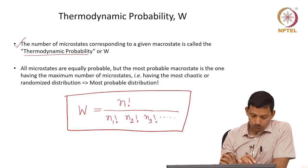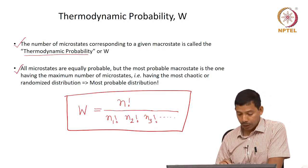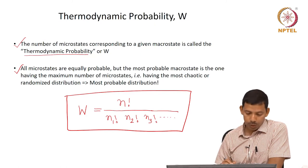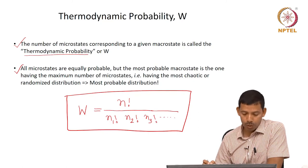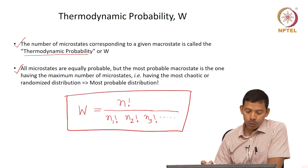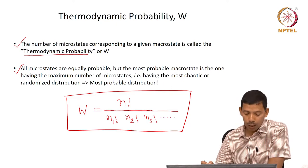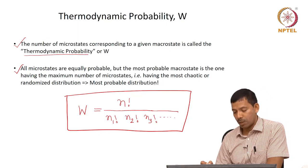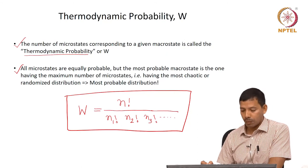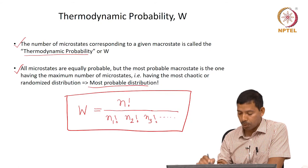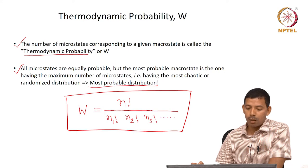All microstates are equally probable, but the most probable macrostate is the one which has the maximum number of microstates — that is, the most chaotic or randomized distribution — and that is the definition of most probable distribution. So the most probable distribution is the one where the number of microstates is maximum.